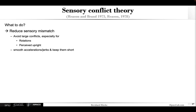So what can we do about this based on the sensory conflict theory? Of course, the best would be to completely reduce or eliminate any kind of sensory mismatch. If that's not possible, really try to avoid larger conflicts, especially for rotations — when people wear a head-mounted display, these are very critical — and also any issues related to messing with the perceived upright. Avoiding a lot of smoothing issues, acceleration, and jerks can also help a lot.